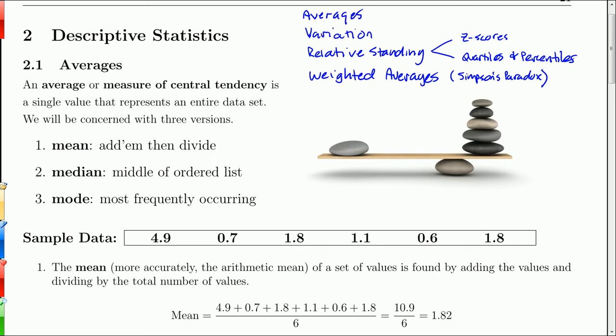In this chapter, we'll assume that we have collected our data through some sort of sampling method, and then what we want to do is describe the data.